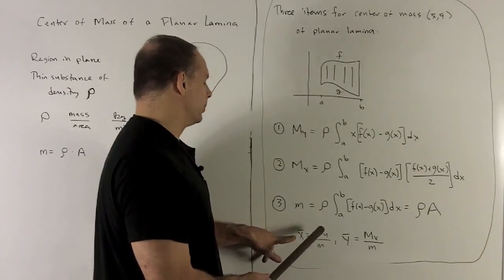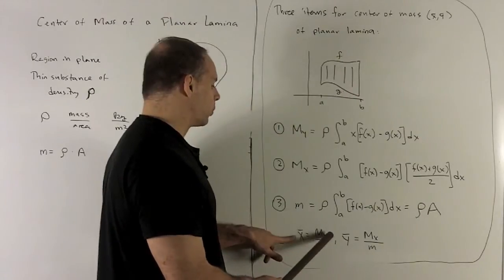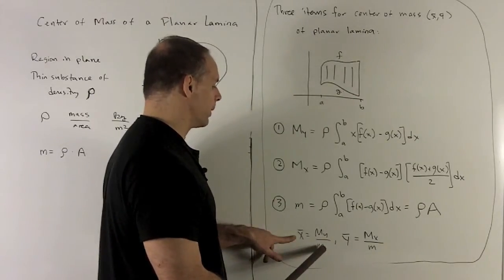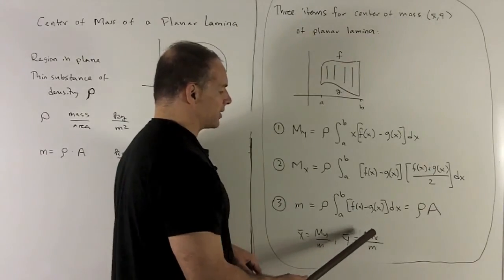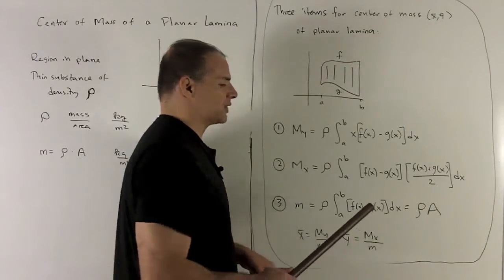Once I have these three items computed, we can get our coordinates for the center of mass. The x-bar is going to be, remember, we use the opposite letter, the moment about the y-axis over the total mass m. And then the y-coordinate, y-bar is the moment about the x-axis over the total mass m.